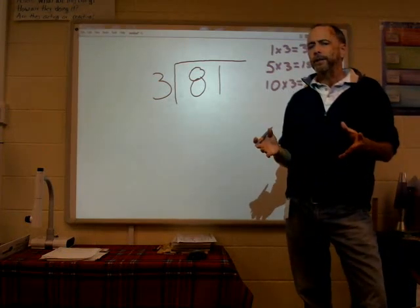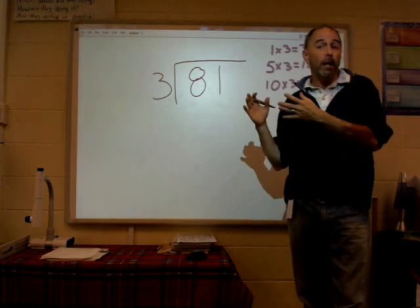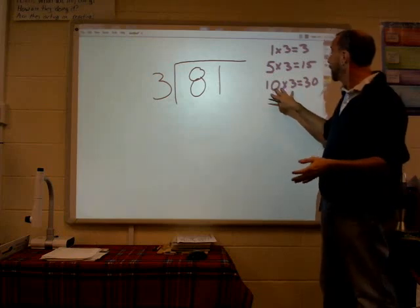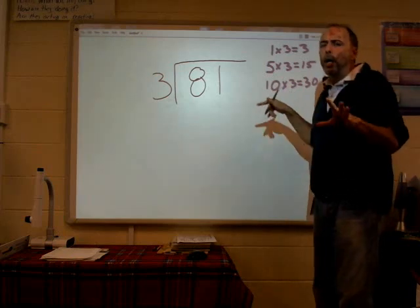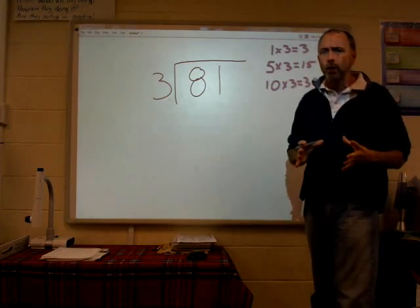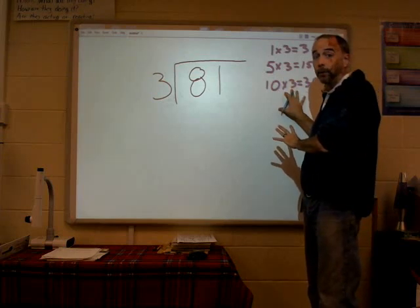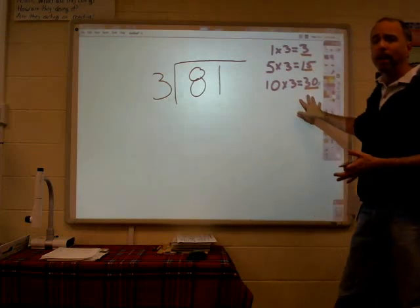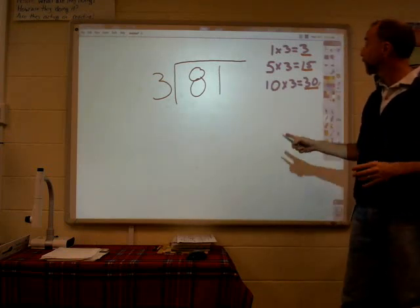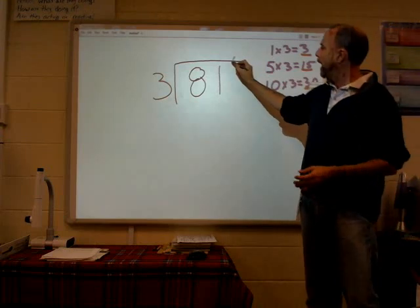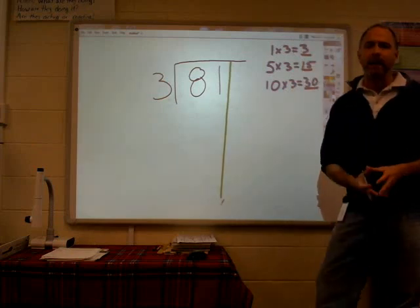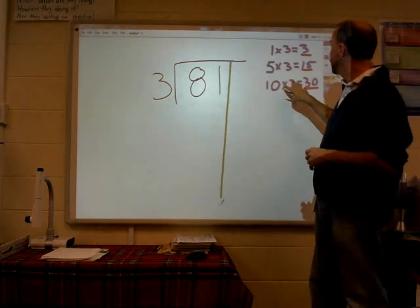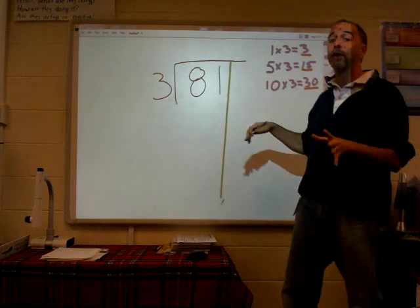We use the benchmark numbers to give us starting points. Now people with higher fact awareness — they know their multiplication facts really well — they'll be a little more advanced and able to go in between these numbers, doing 20, 30, 40. But for those who don't have their math facts as solid as they need to, this is who this is designed to help. I look at my three benchmarks and ask: which benchmark is closest to my divisor without going over? Which of course is 30.